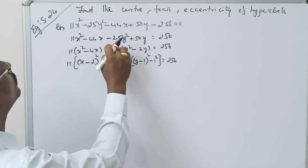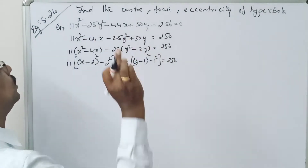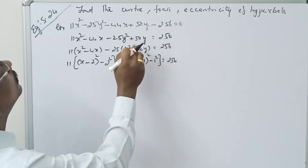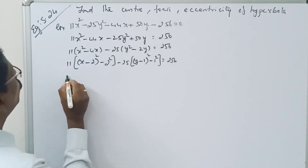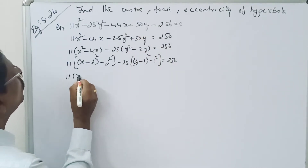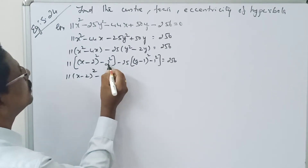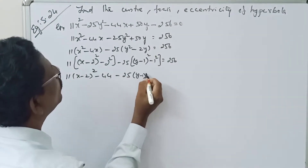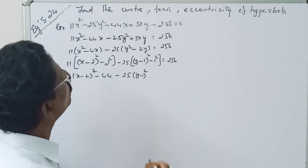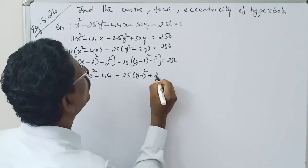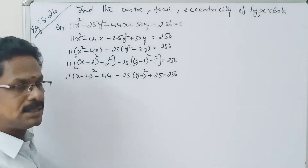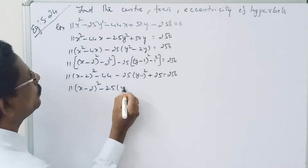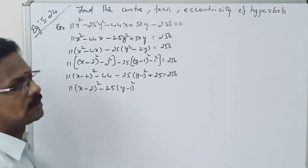So we get: 11(x - 2)² minus 11×4, minus 25(y - 1)² plus 25×1 = 256. That gives 11(x - 2)² minus 44 minus 25(y - 1)² plus 25 = 256.